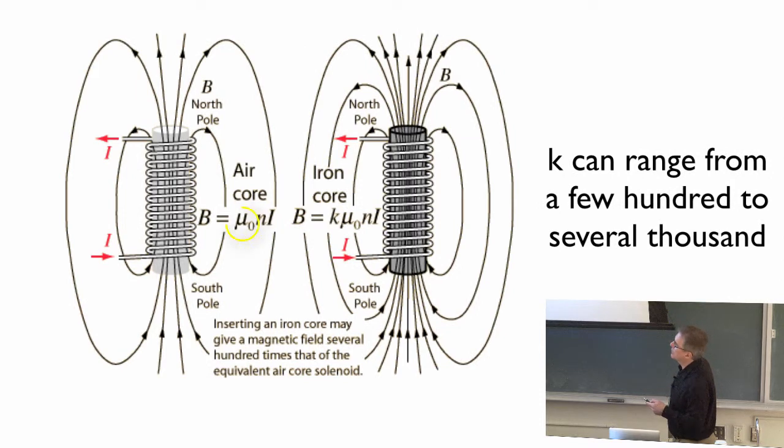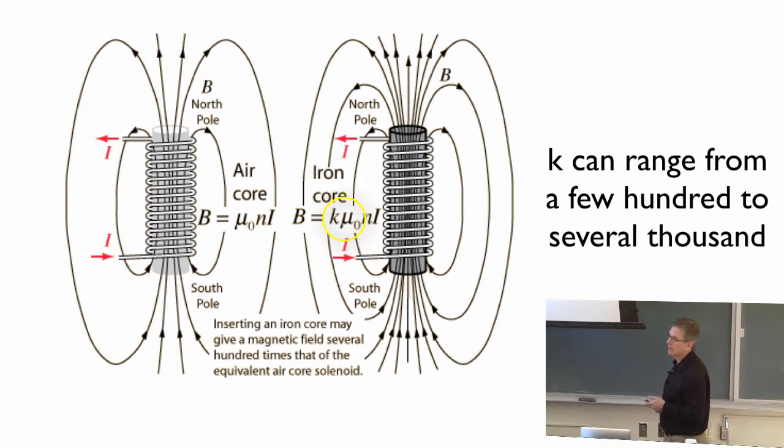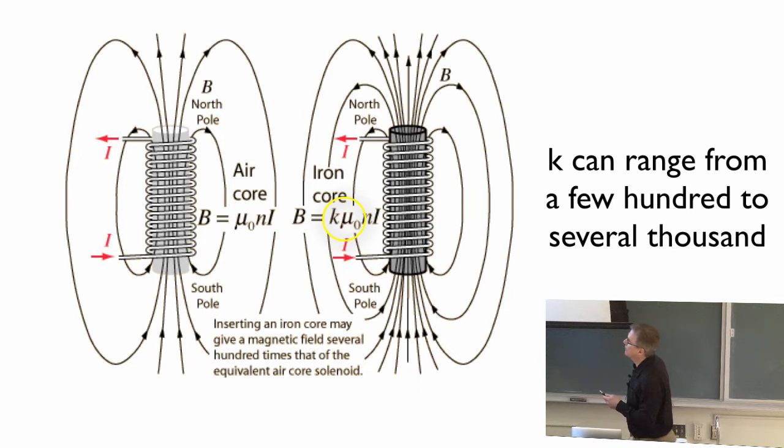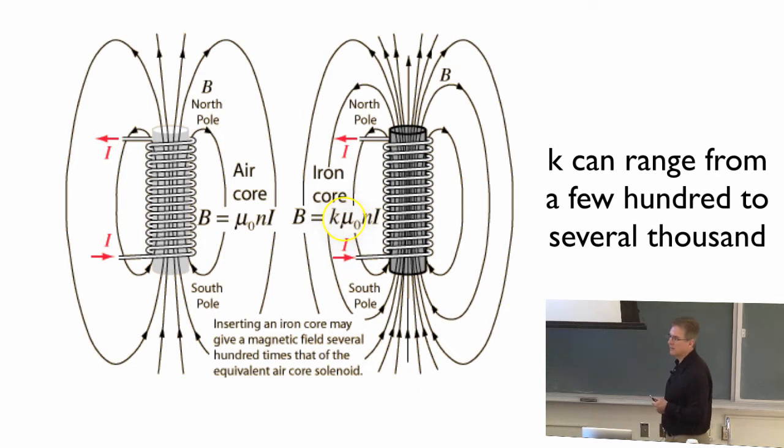So rather than just being this constant of nature mu naught times the number of turns per unit length times the current that would be the magnetic field inside an air core solenoid. If you have an iron core solenoid you get this enhancement factor K and depending on the type of iron and so forth it can range from a few hundred to several thousand. So you can get a thousand times bigger magnetic field just by sticking some iron in there.